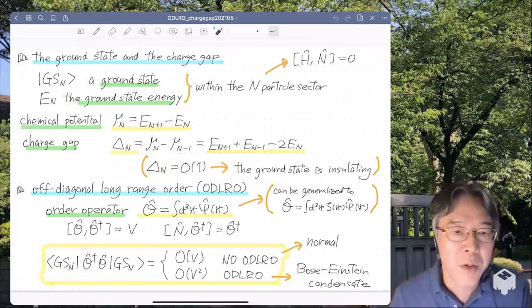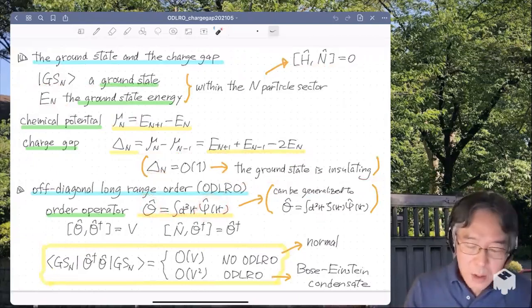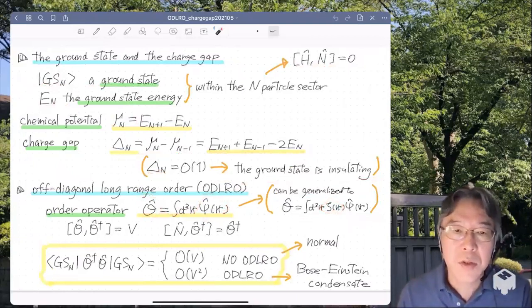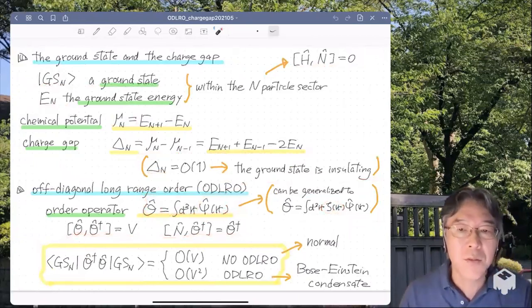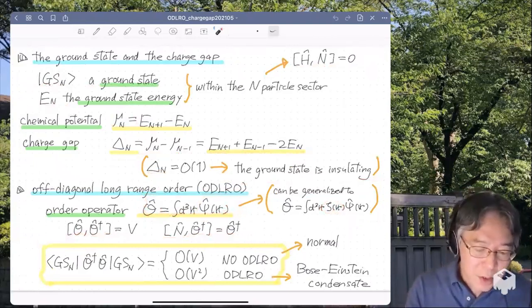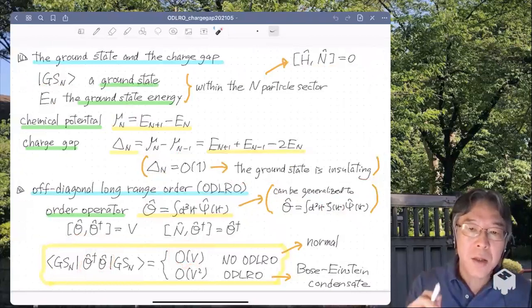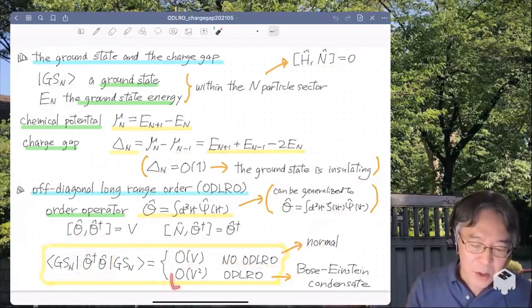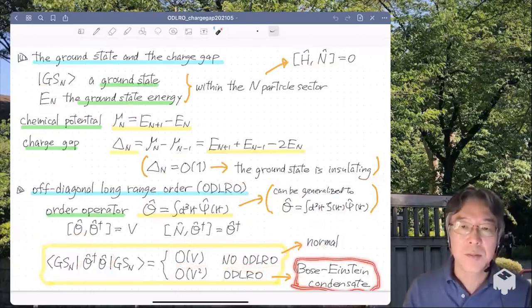Now let's look at off-diagonal long-range order. I define order operator O this way. It's simply the integration of the annihilation operator. And actually you can consider, if you like, you can consider much more general order operator like this, where theta is a complex valued function. But let me stick to this simplest case. Now, it satisfies these commutation relations. And here's the criterion for off-diagonal long-range order. So you look at the ground state expectation value of this O dagger O. And if this is of order V, then the off-diagonal correlation is short-range. Then we say that there's no off-diagonal long-range order. In this case, the ground state is in the normal phase. And if this expectation value is of order V squared, then we say that there is off-diagonal long-range order. In this case, the ground state is a Bose-Einstein condensate.